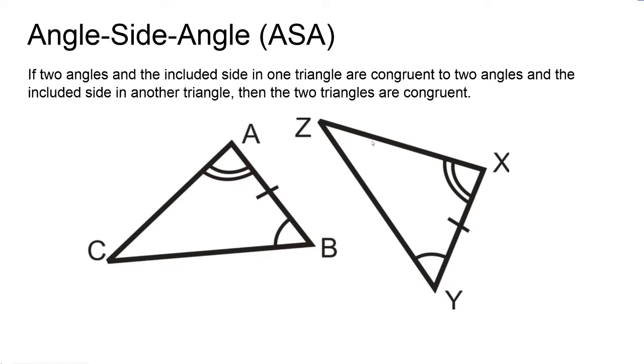I have angle A and angle X are congruent, angle B and angle Y are congruent, and then side AB and side XY, which is the included side of these two angles, is congruent. This leads me to be able to conclude that triangle ABC is congruent to triangle XYZ.